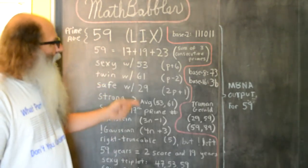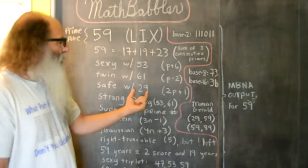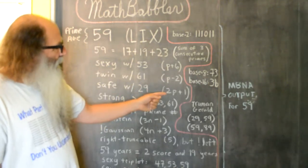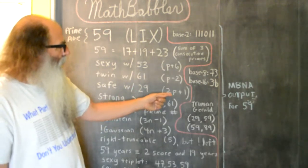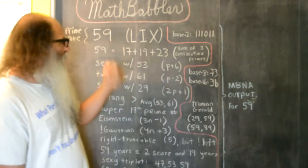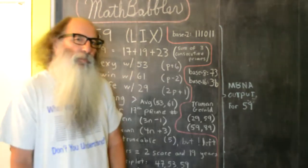59 is a safe prime with 29. 29 is a prime number, and it's of this form here. If I take 2 times 29 and then add 1, I get 59, so that makes them safe primes.